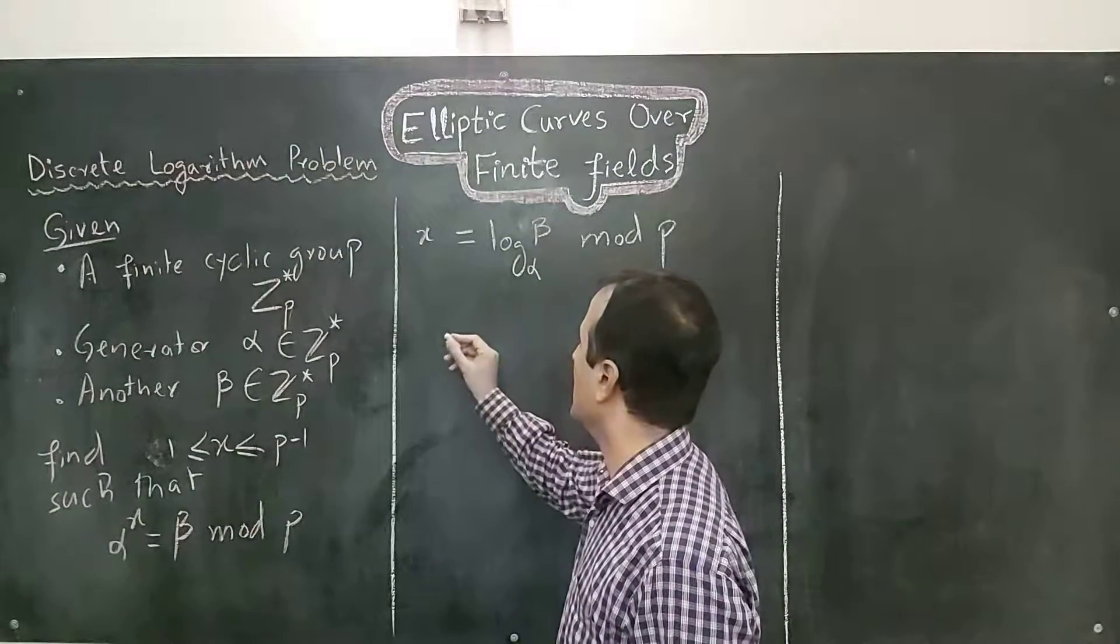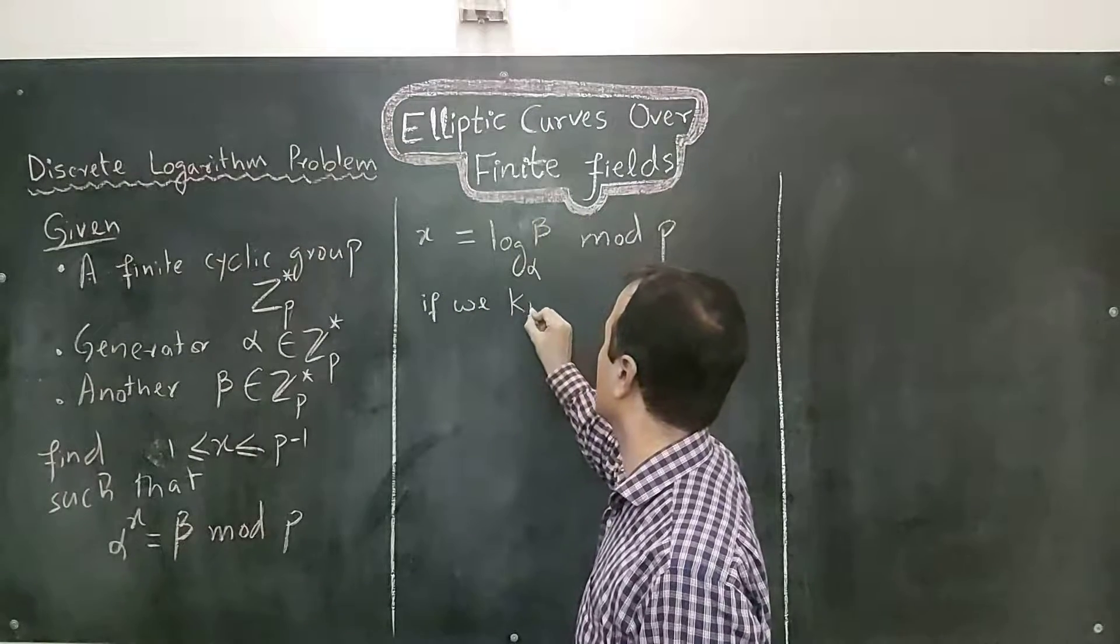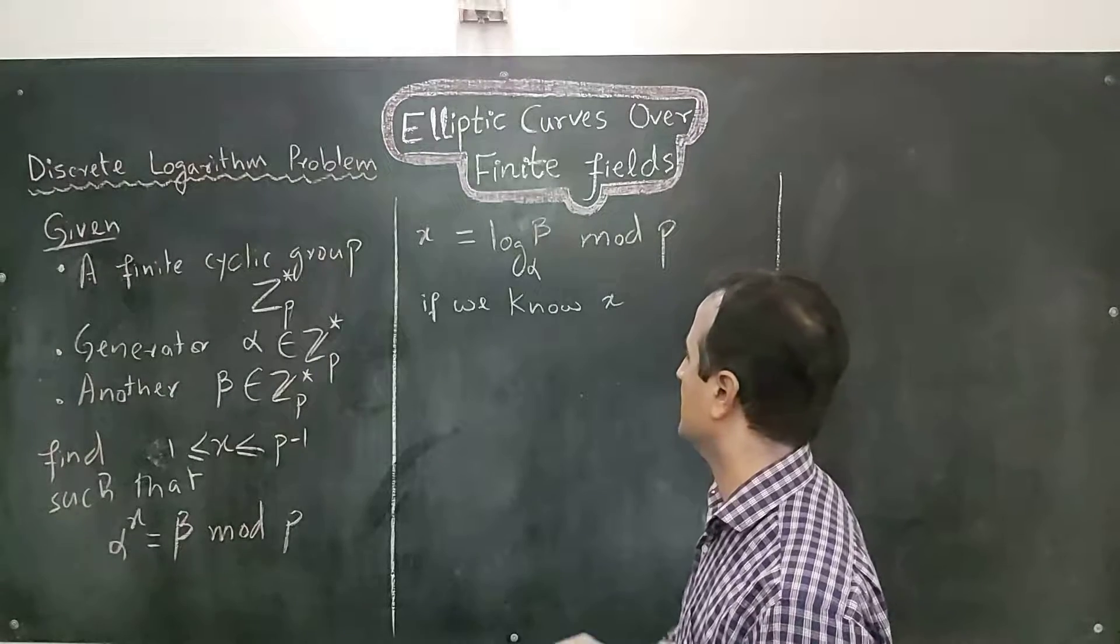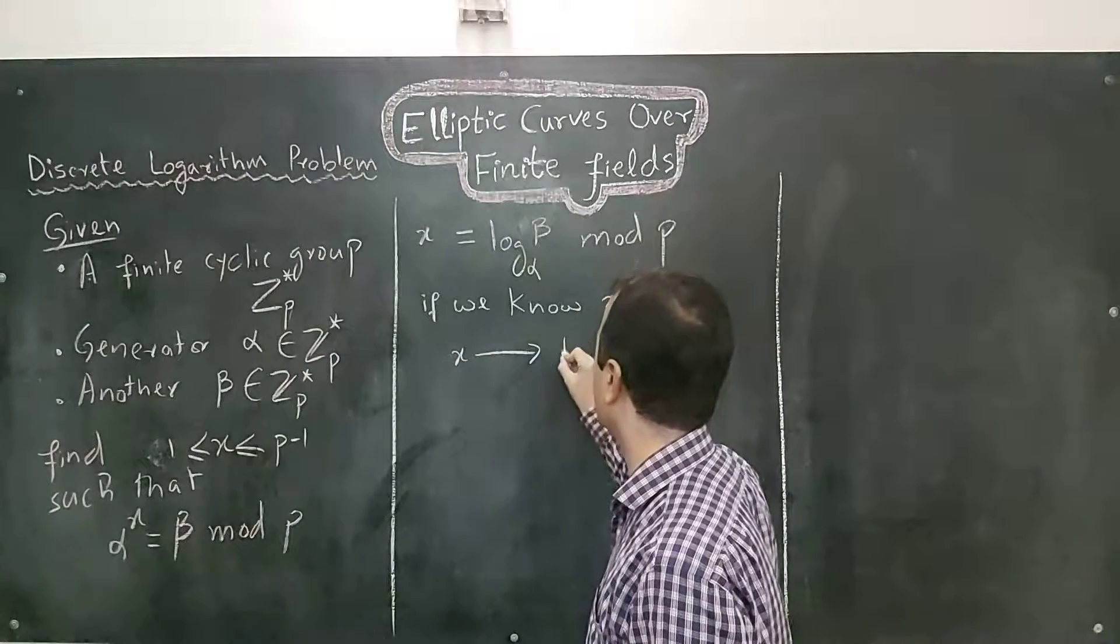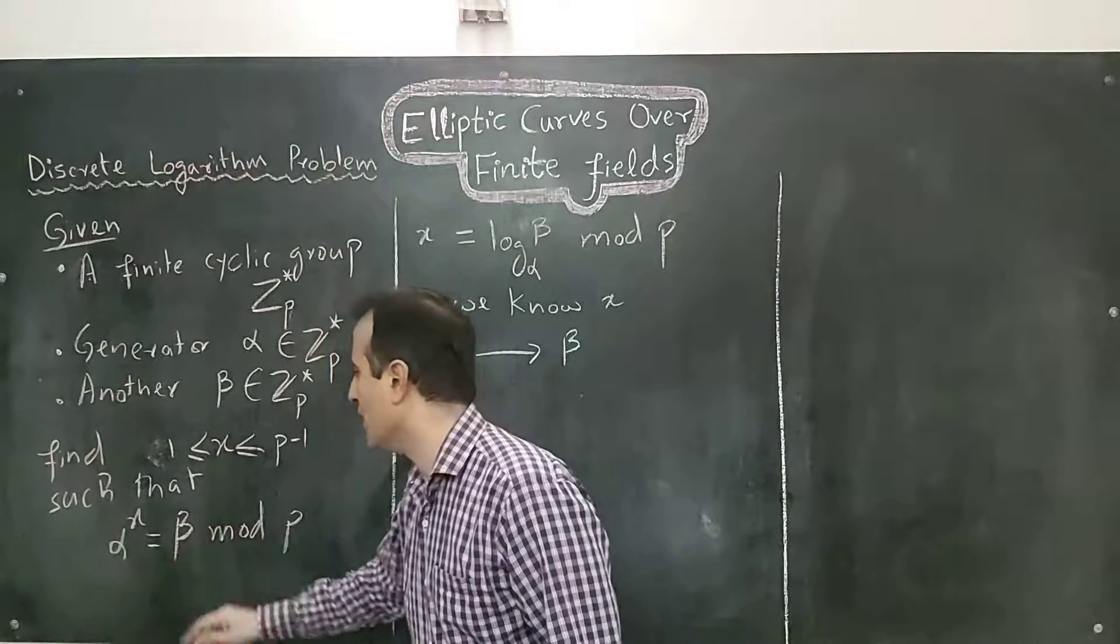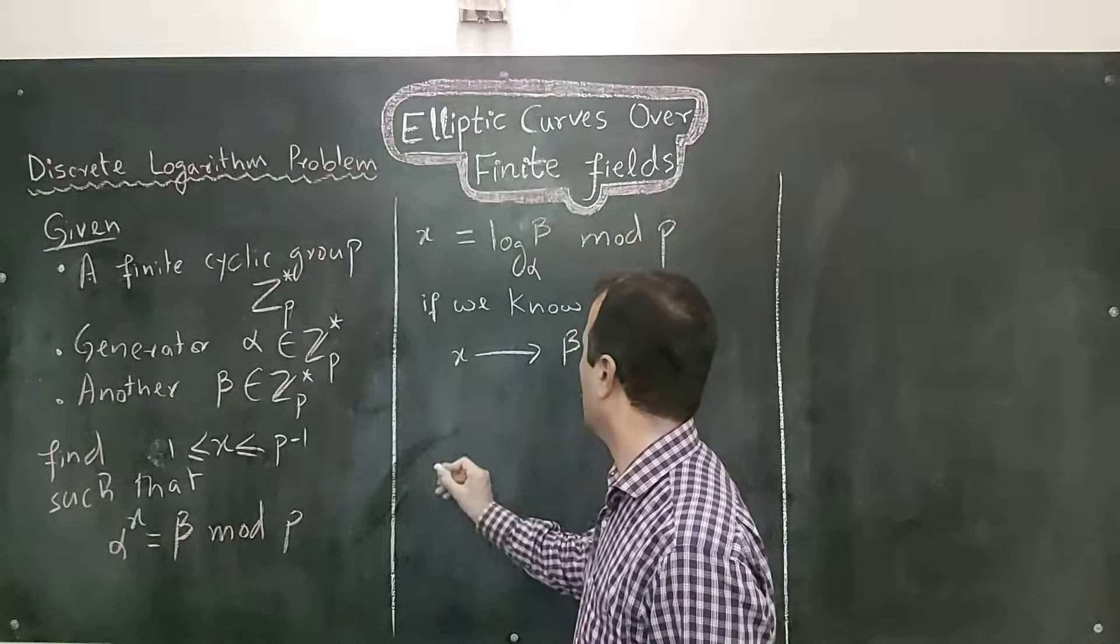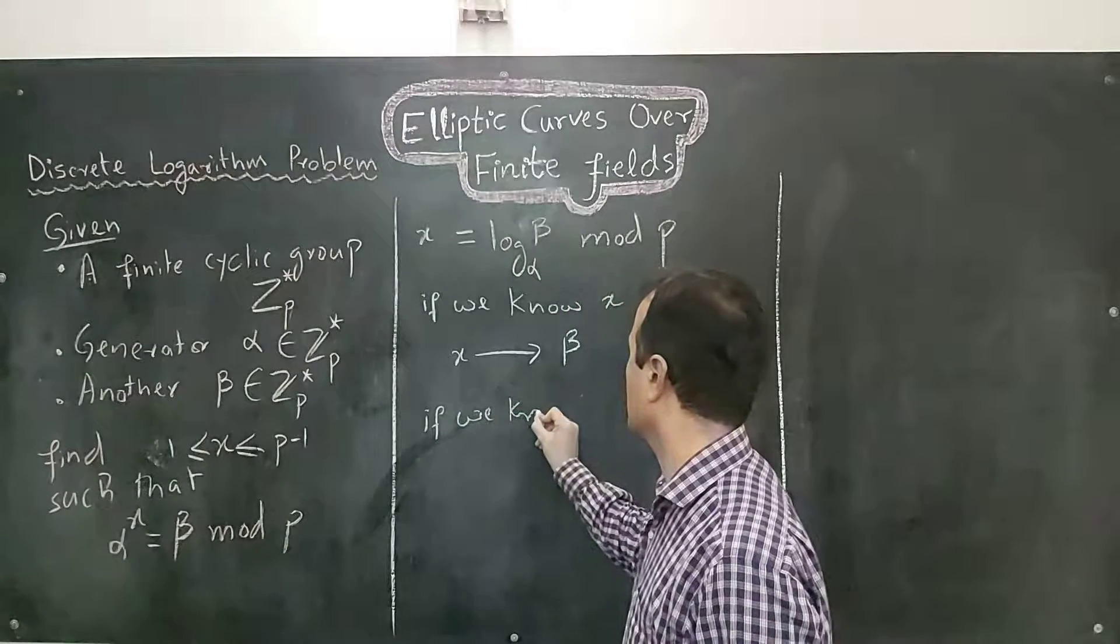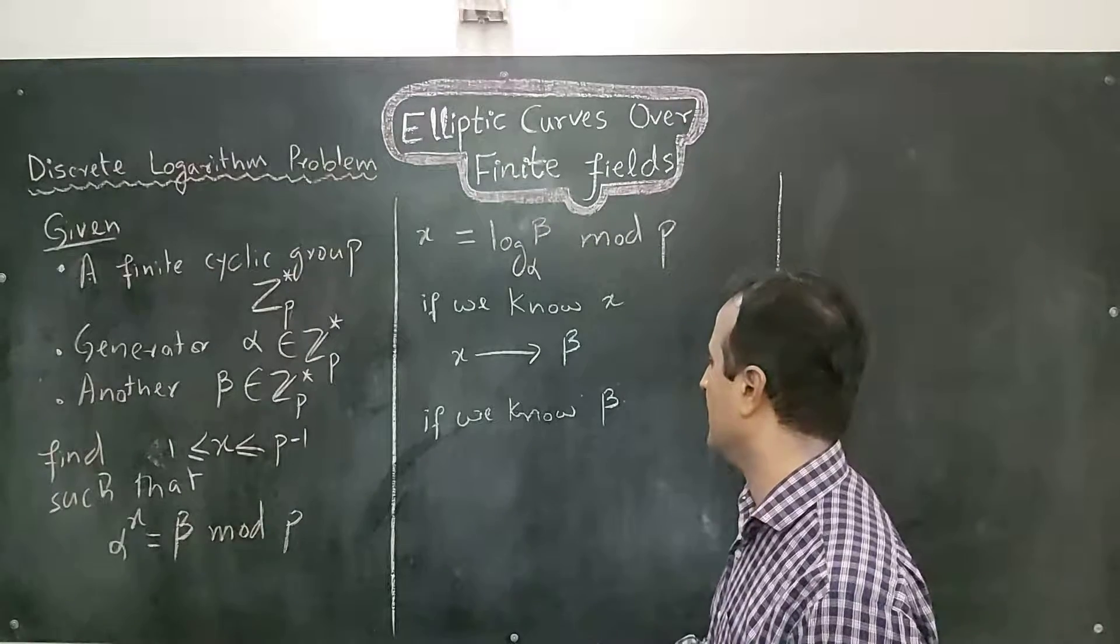That is, if we know x then we can easily find beta. So, given x we can easily compute beta. We have to take power of alpha and we will have beta. However, if we know beta, then computing x is very difficult.